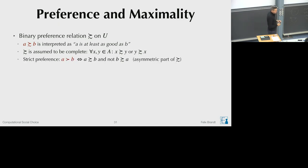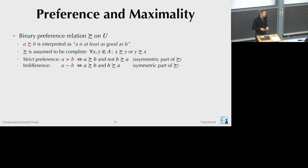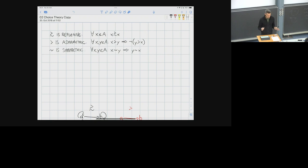We can define the strict part of this preference relation: A is strictly preferred to B means A is weakly preferred to B and it is not the case that B is weakly preferred to A — technically the asymmetric part. We can also define indifference: A is indifferent to B means A is weakly preferred to B and B is weakly preferred to A. The weak preference relation is reflexive, the strict part is asymmetric, and the indifference relation is symmetric.